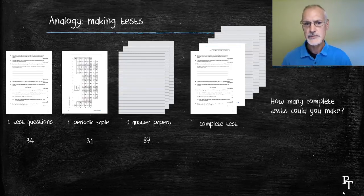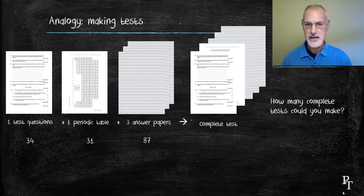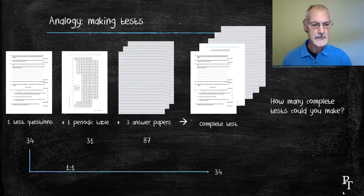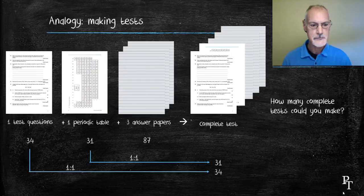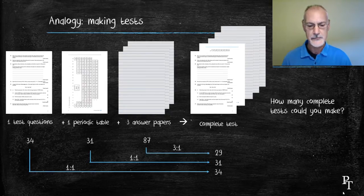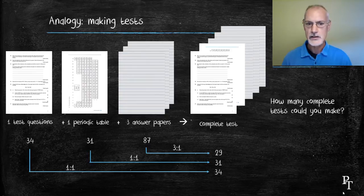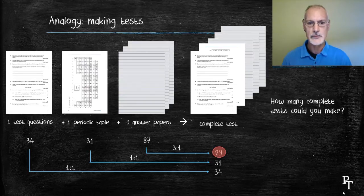I want to show you an approach to this that we can take to chemistry. So the making of a test is much like a chemical equation. And what I'm going to do now is take each of these items and predict how many tests they could make. So 34 test questions could in theory make 34 complete tests. If I consider the periodic tables, they also have a one-to-one ratio, one periodic table for one complete test, I could make 31 complete tests. And with 87 sheets of foolscap or answer papers being a three-to-one ratio, I could make 29 complete tests. The rule is you can only make the smaller of those amounts because you'll run out of that particular item. So 29 tests is the maximum number of tests I could make.